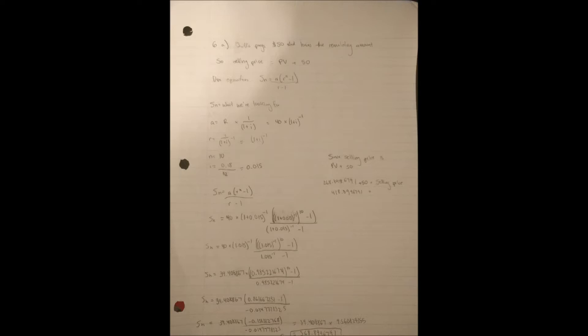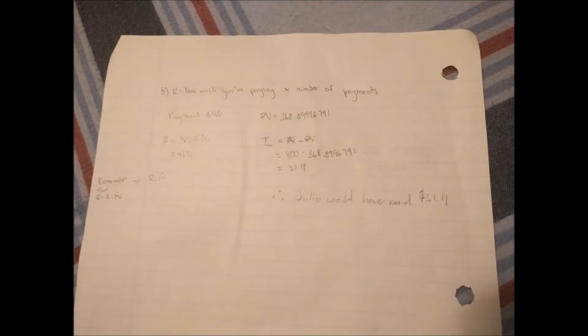Our final result after the math is 368.8996791. If we add this value to 50 we can get our selling price. Our selling price is then 418.8996791. Therefore, Julio's player is $418.90.